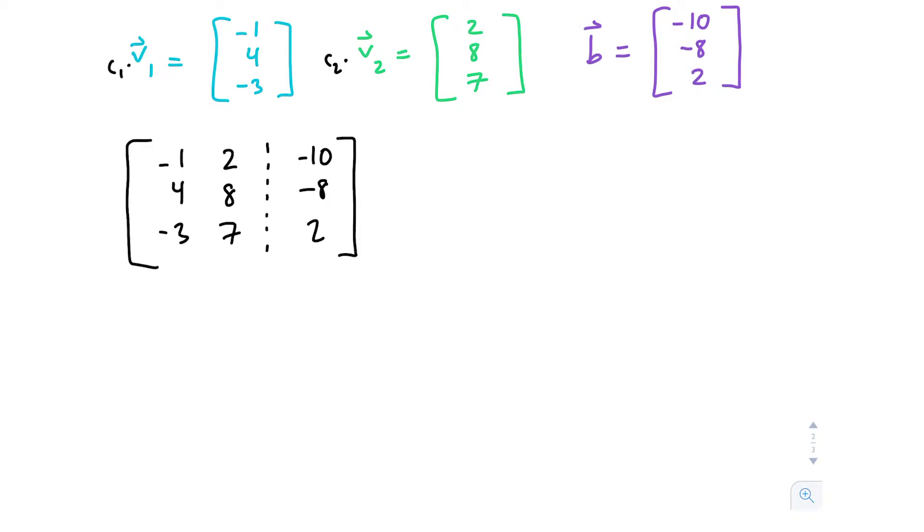So what we're going to do instead is row operations. I like this negative 1 here. I think I'm going to use it to cancel out the leading term of the second row. If I multiply this first row by 4, I'm going to get negative 4, 8, negative 40.